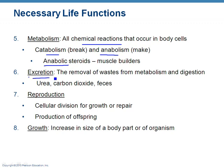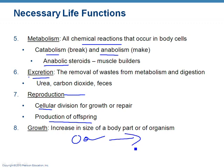You have to be able to excrete stuff — get rid of the bad stuff, things like urea, carbon dioxide, and feces. You've got to reproduce — not just making offspring, but growth and repair: making more blood cells, more skin cells, more bone as you grow. All of these are reproduction at the cellular level. And you've got to grow — you've got to have a growth process to become a fully formed organism.